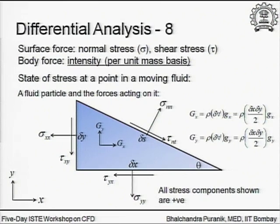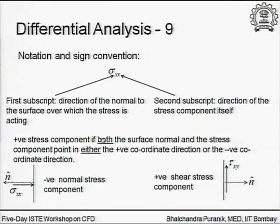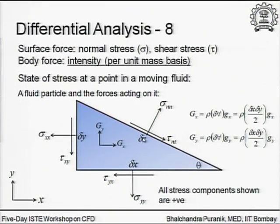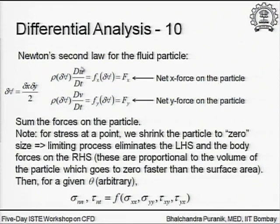Mathematically, we take the limit as delta x, delta y, and hence delta s all tend to zero. If you carry out the algebra, you will see that the left-hand side, which contains a volume element, and the body force term on the right-hand side, actually go to zero in the limit faster than the surface forces.